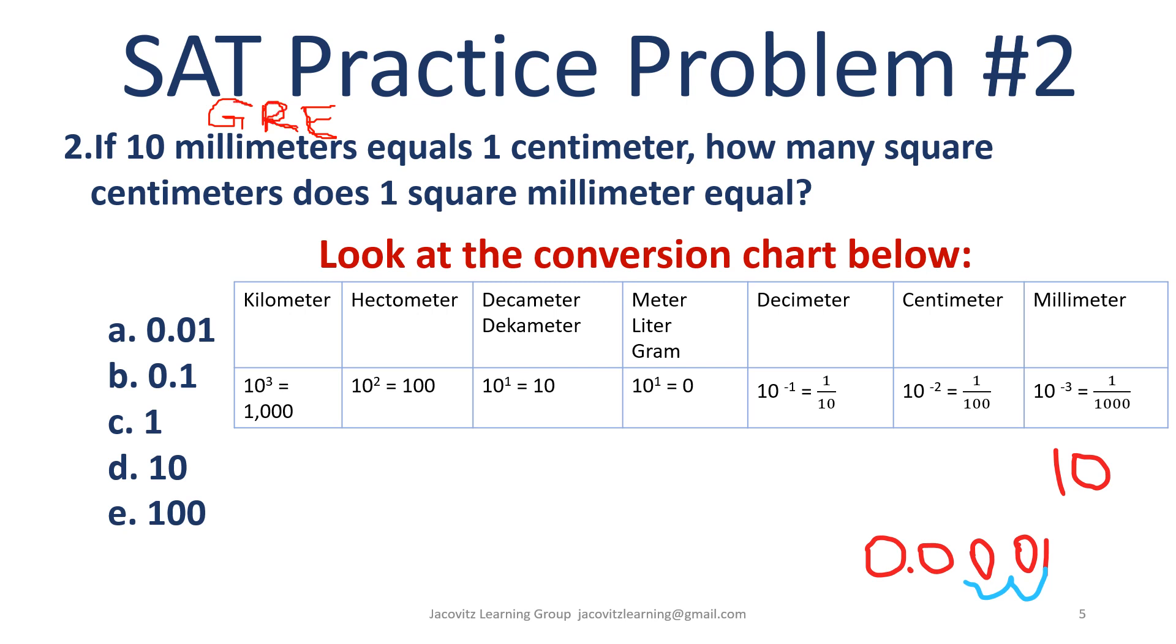If 10 millimeters equals one centimeter, how many square centimeters does one square millimeter equal? So they're going backwards. Your millimeters are way over here. Millimeters are smaller - liters are what we use with water, kilometers are what people run. The kilometer is actually higher because a milliliter is a bottle, that's what they put water in.